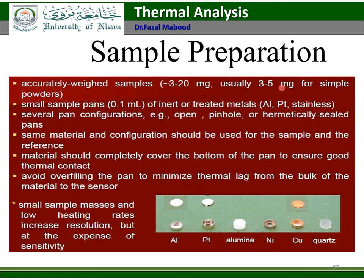For sample preparation, use an equally weighed sample of 3 to 20 mg — usually 3 to 5 mg for simple powder. Use a small sample pan of 0.1 mL of anodized or treated metals like aluminum, platinum, or stainless steel. Several pan configurations are available, for example open, pinhole, or hermetically sealed pans.